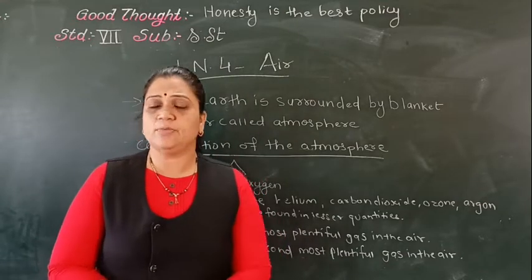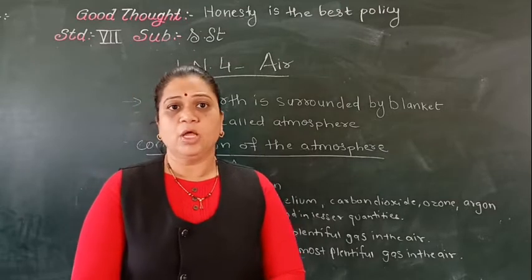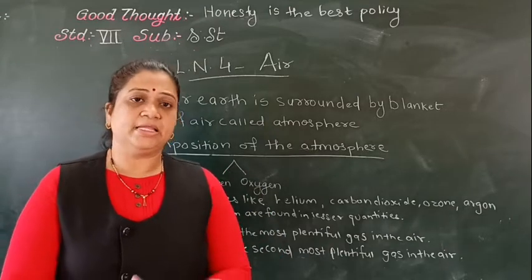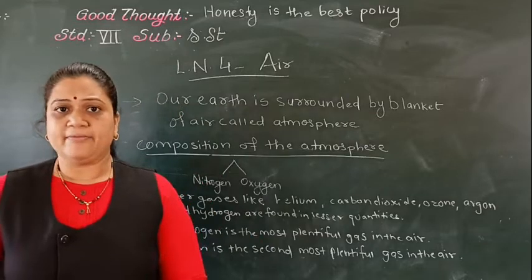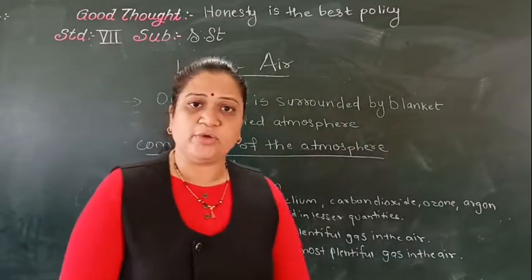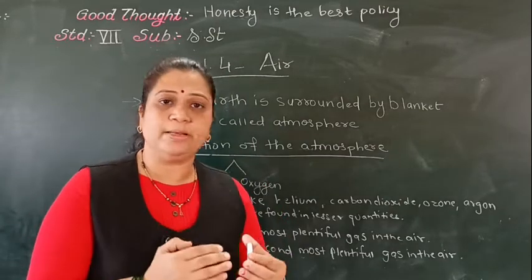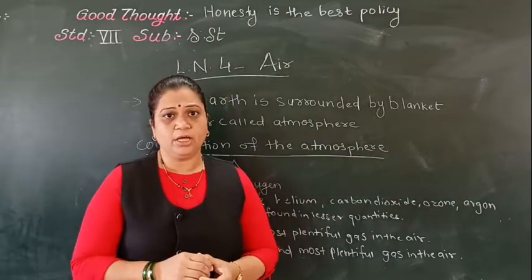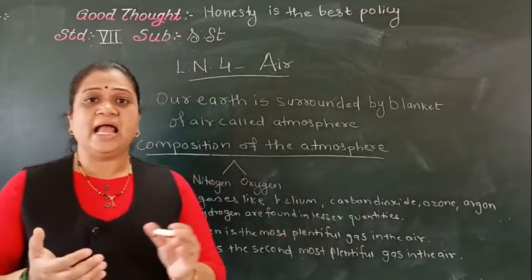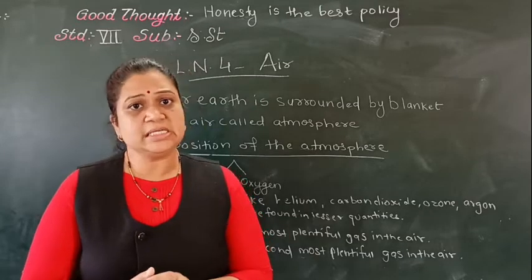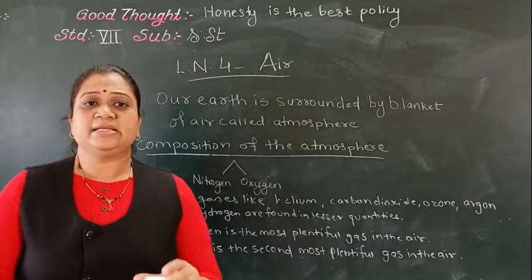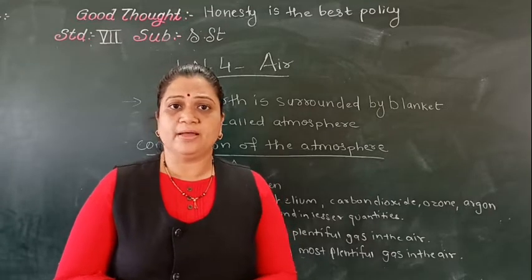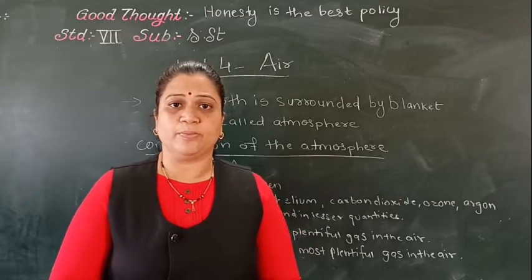Today we have studied about what the atmosphere is, and in the composition of the atmosphere we studied the proportion of gases available — oxygen is 21%, very important for human and animal life, and nitrogen is 78%, very important for plant life. We also studied how oxygen and carbon dioxide are produced through the photosynthesis process. Children, read the lesson thoroughly and try to understand the concept. Today I will stop here. In the next lecture I will continue with another topic. Thank you.